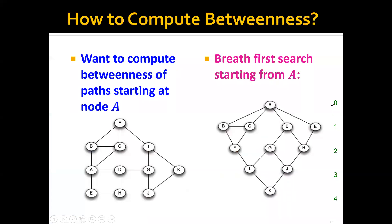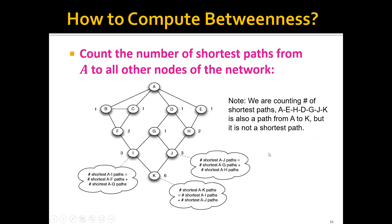For the first question, let's say that we want to compute the betweenness of paths starting at node A. We'll perform a breadth-first search starting from A, and therefore we can reorganize the graph as something on the right here. We can see the first level of the graph, the second level, the third level, and the fourth level. Then we can count the number of shortest paths from A to all other nodes of the network with this reorganization.